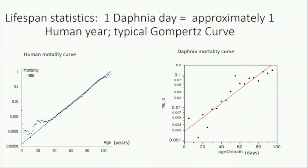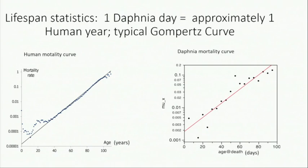Here's a Gompertz curve, which is a mortality curve, plotted on a log scale here for humans and for one experiment with Daphnia that we did. They're pretty similar in their shape — they show this exponential increase in mortality with age.